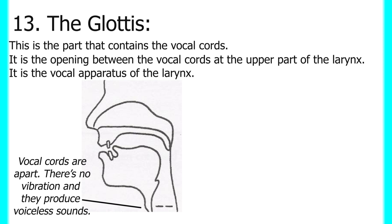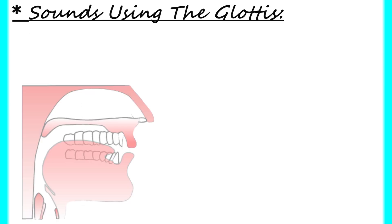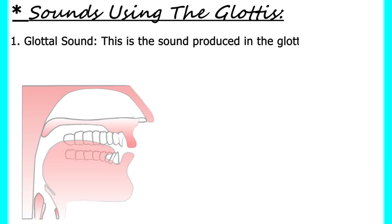When the vocal cords are apart and the glottis is open, air passes freely, producing voiceless sounds — there is no vibration. The sound produced in the glottis is called a glottal sound. English has just one glottal sound: the sound for the letter H. It is a voiceless sound with no vibration. This sound is produced by keeping the vocal folds spread somewhat, resulting in non-turbulent airflow through the glottis.